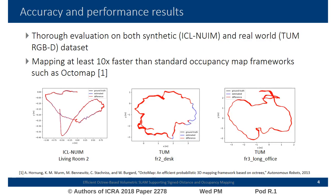We have thoroughly evaluated our system on both synthetic and real-world datasets, demonstrating accuracy results on par with the current state-of-the-art. We also demonstrate state-of-the-art computational performance, achieving at least 10 times faster mapping compared to standard occupancy mapping frameworks such as Octomap. We believe this is a crucial feature, especially when deployed on fast mobile agents such as autonomous flying drones.